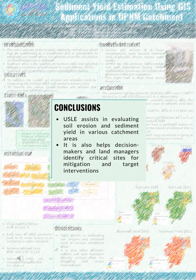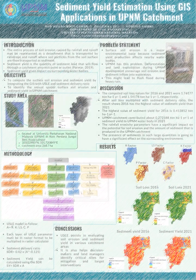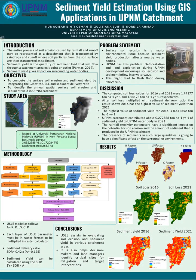In conclusion, GIS assists in evaluating soil erosion and sediment yield in various catchment areas. It also helps decision makers and land managers identify critical sites for mitigation and target intervention. That's all from me. Thank you.